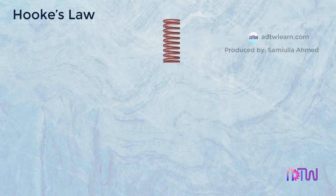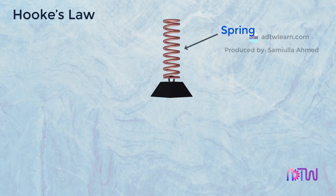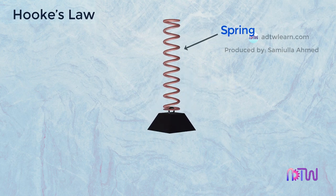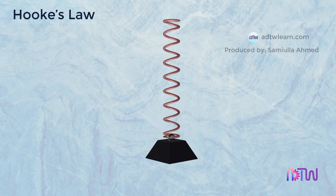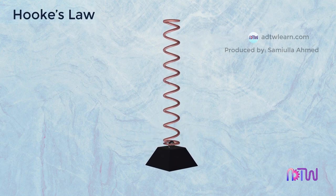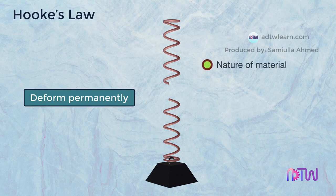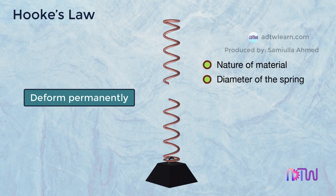For example, when we load a spring with a certain load, first it will show elastic deformation up to some limit. But if we go on adding more load, the spring will break and deform permanently. The elastic limit of a spring depends on the nature of the material and the diameter of the spring.